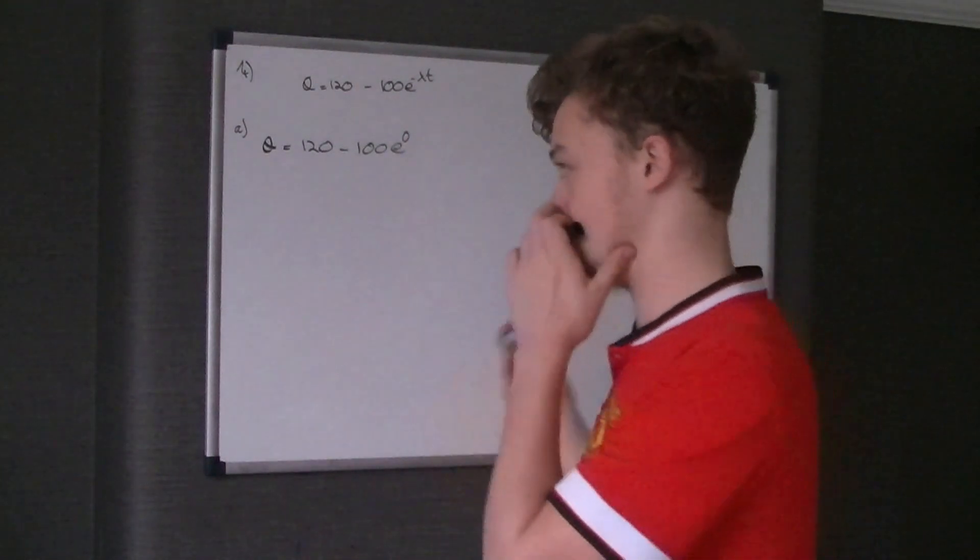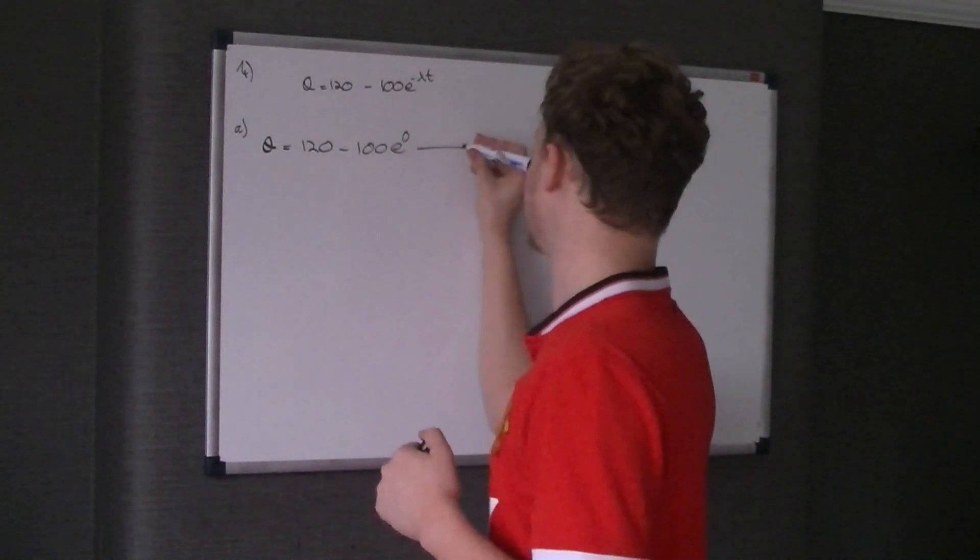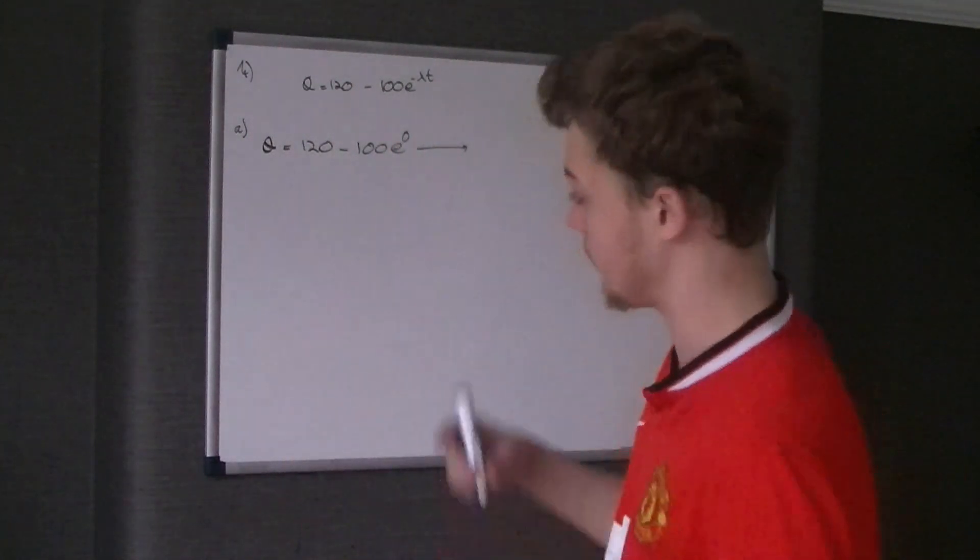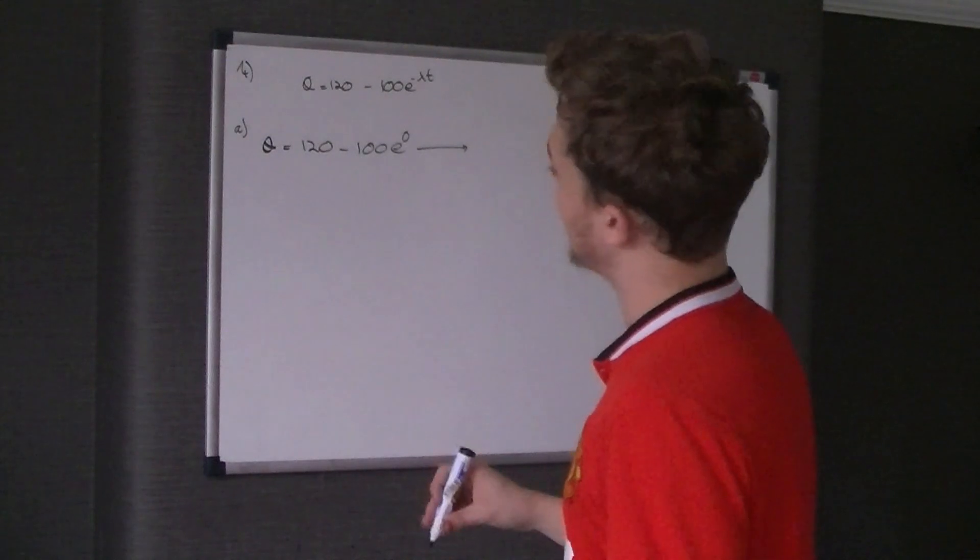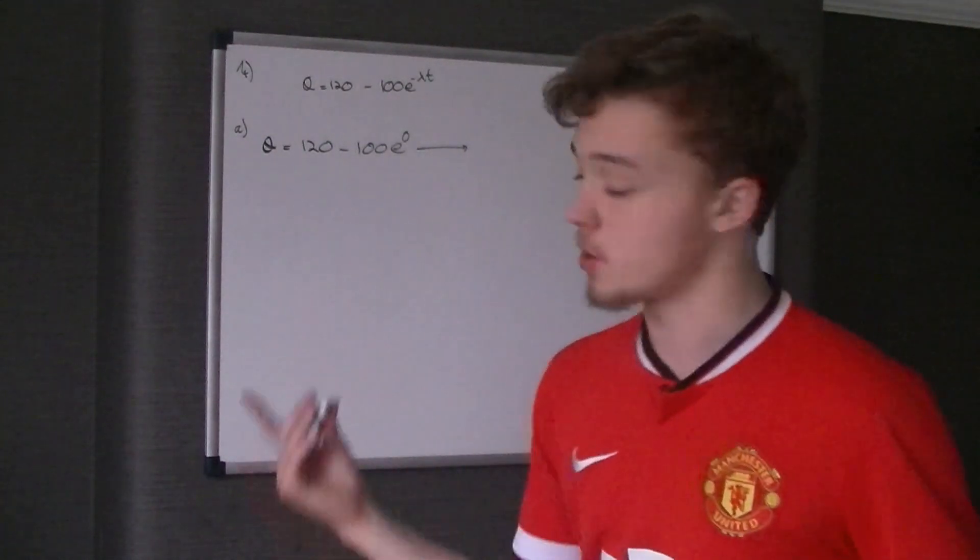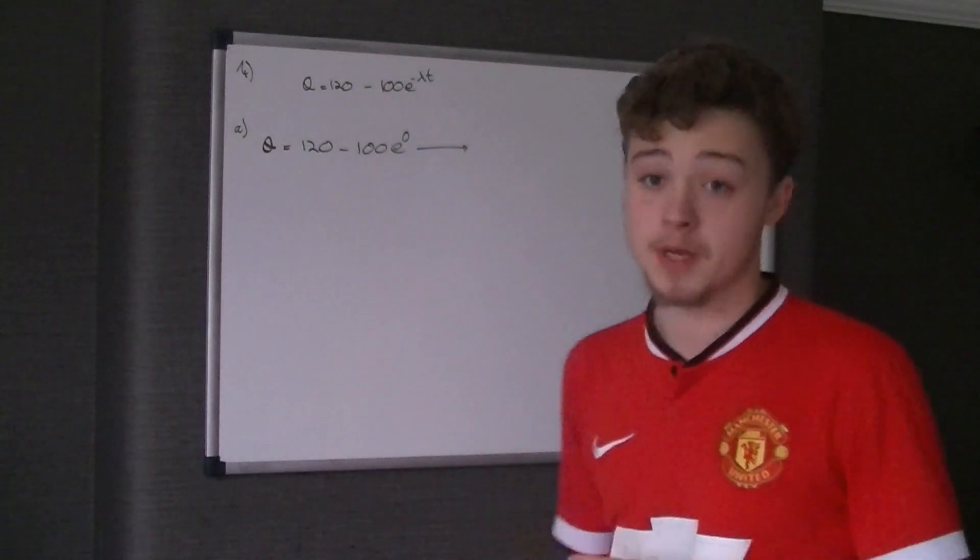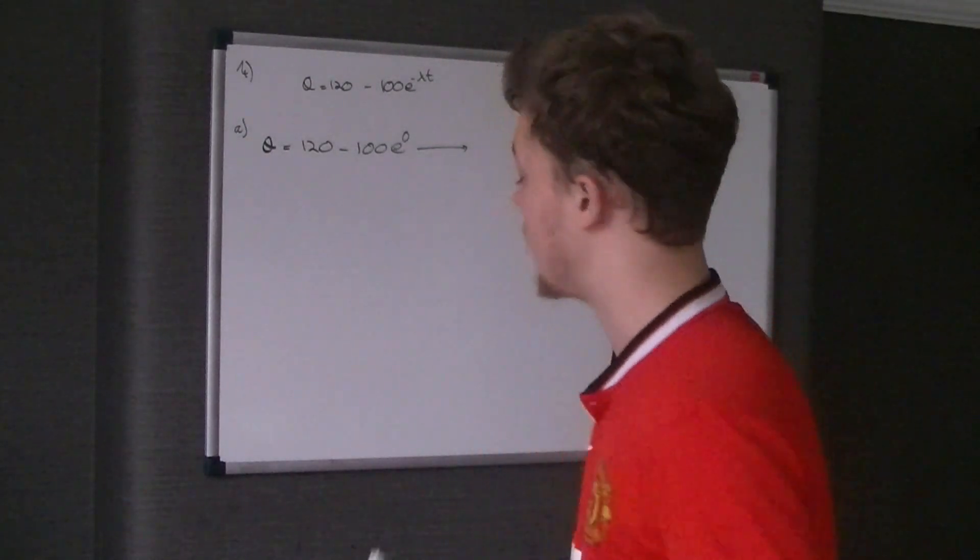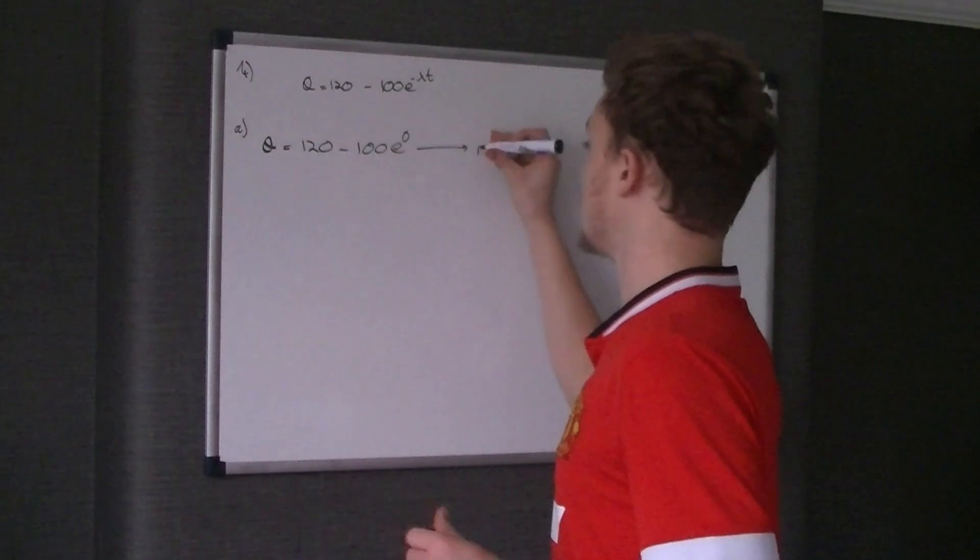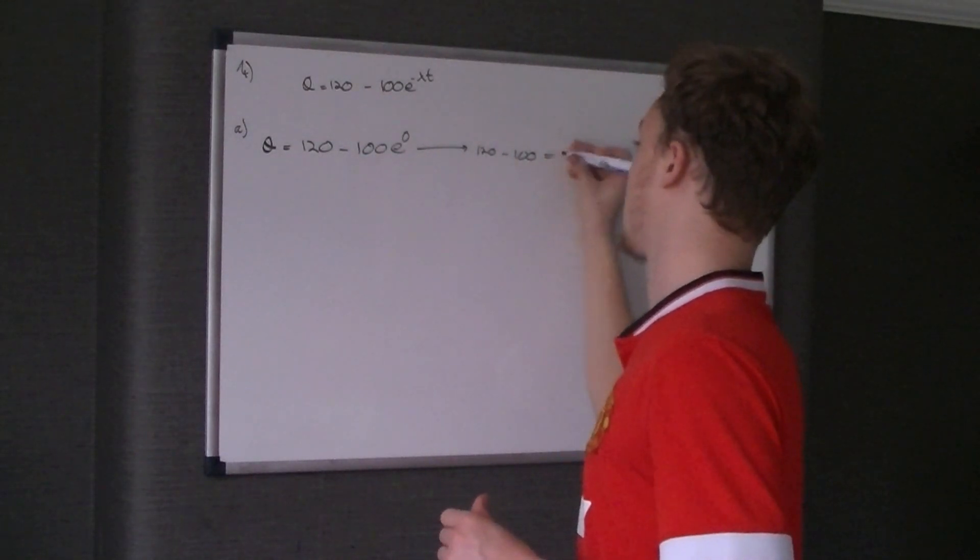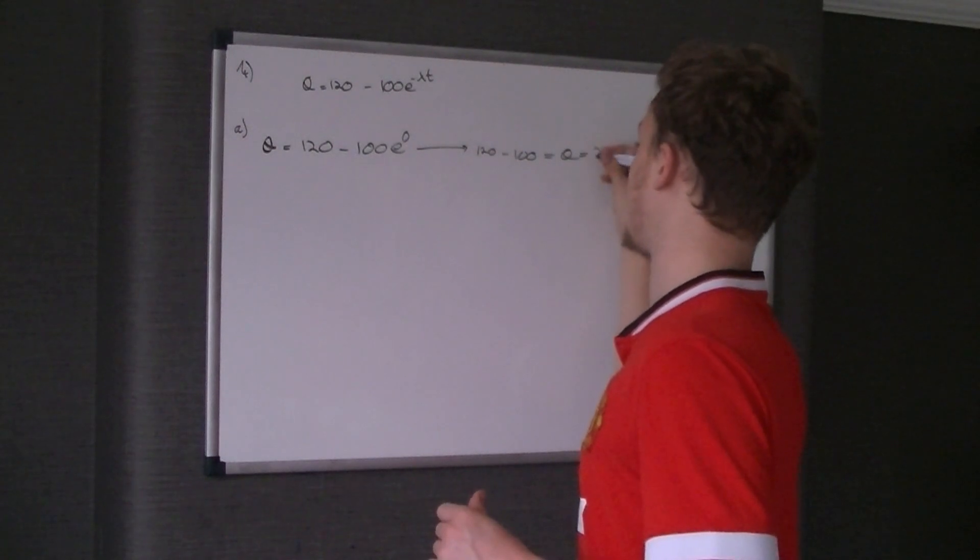So theta is equal to 120 take 100e to the negative. Now, it doesn't matter what lambda is, because if it times by zero, it's going to come to zero. So you just put to the power of zero. Because this is all going to be times by one, it's 120 take 100 times one. So therefore, theta equals 20 degrees.